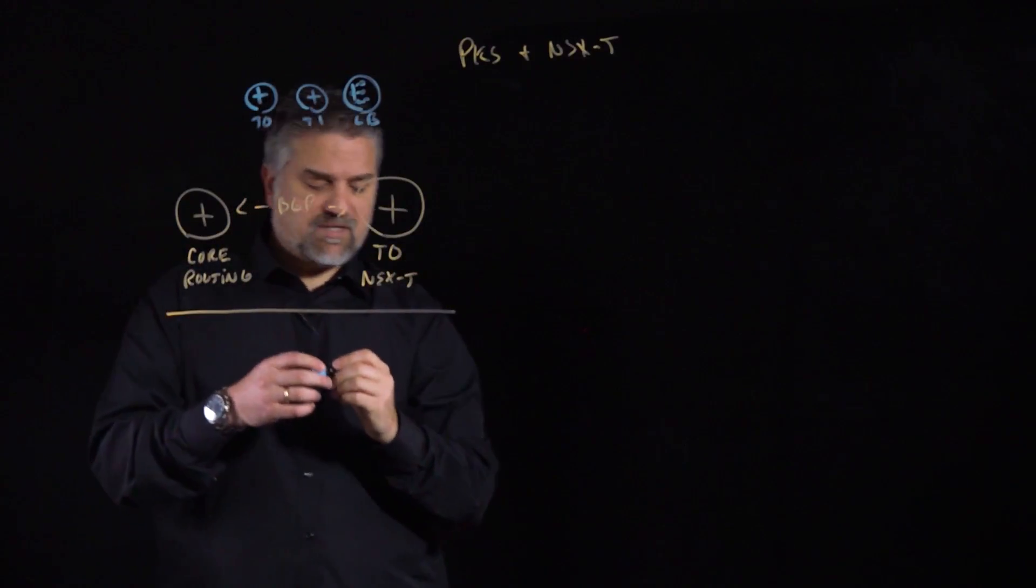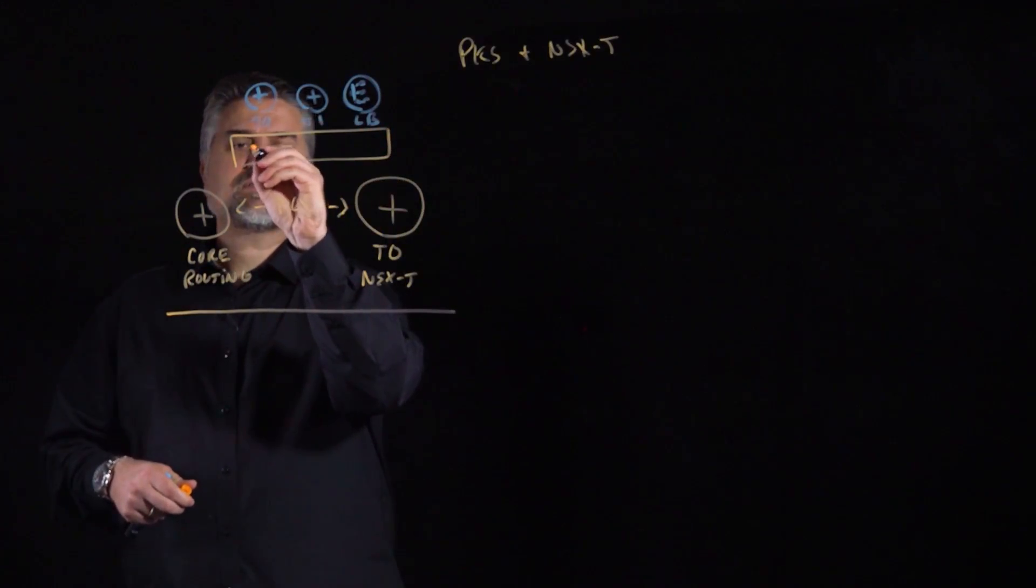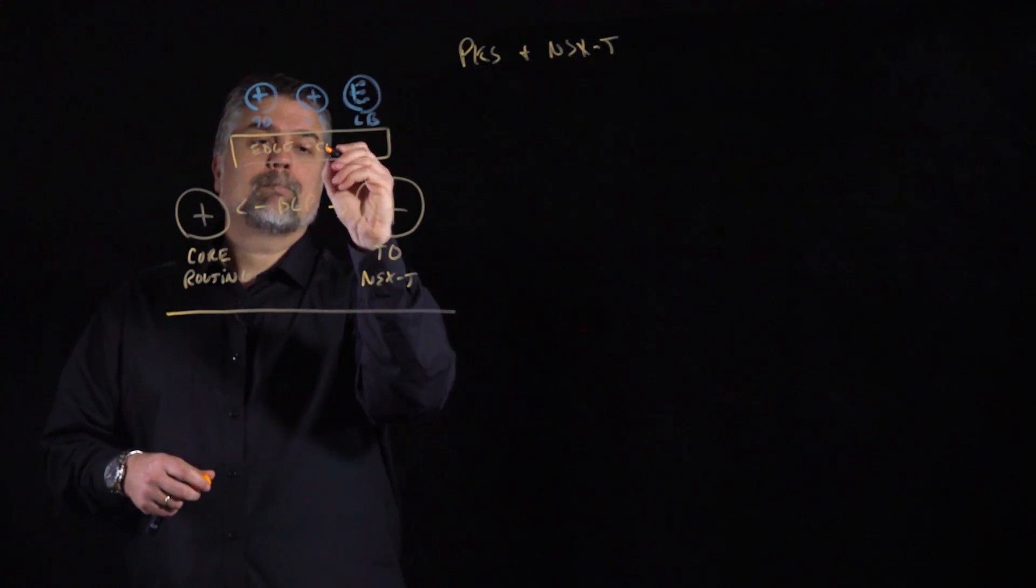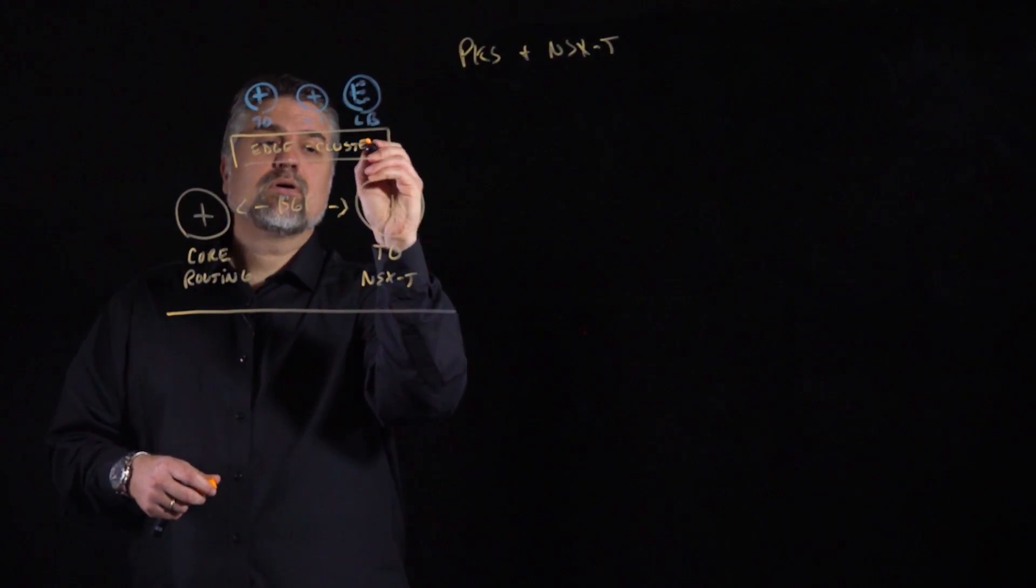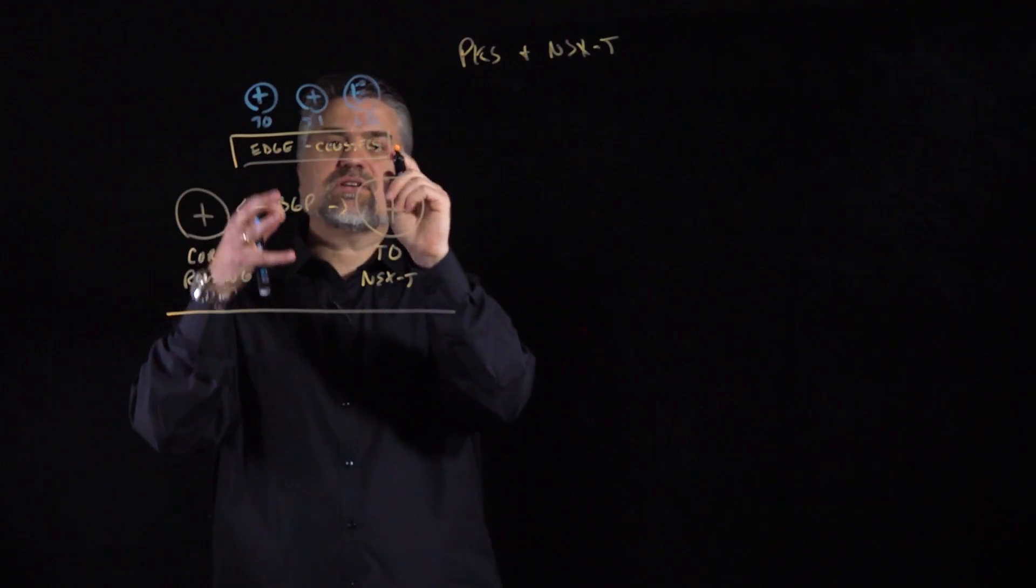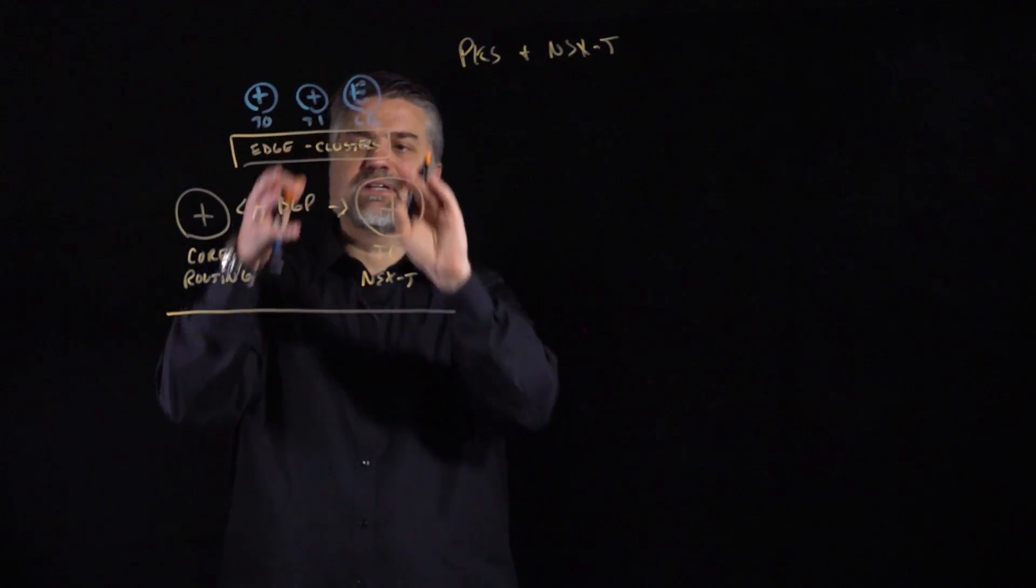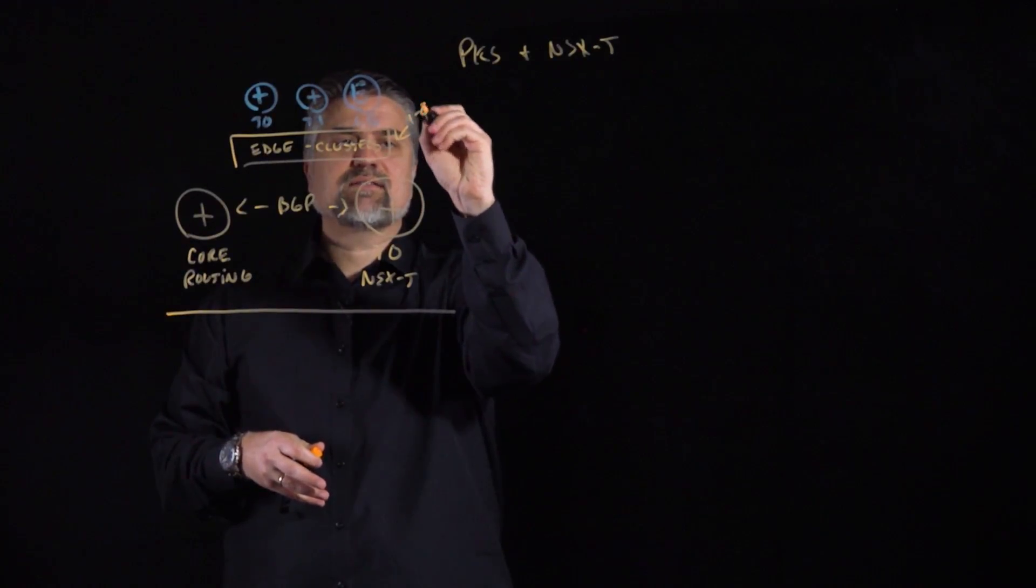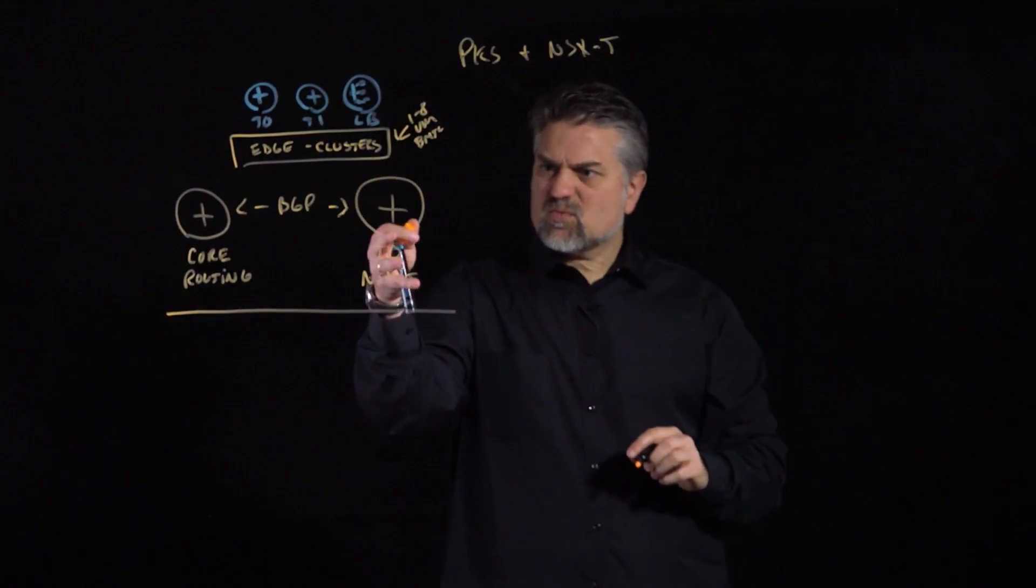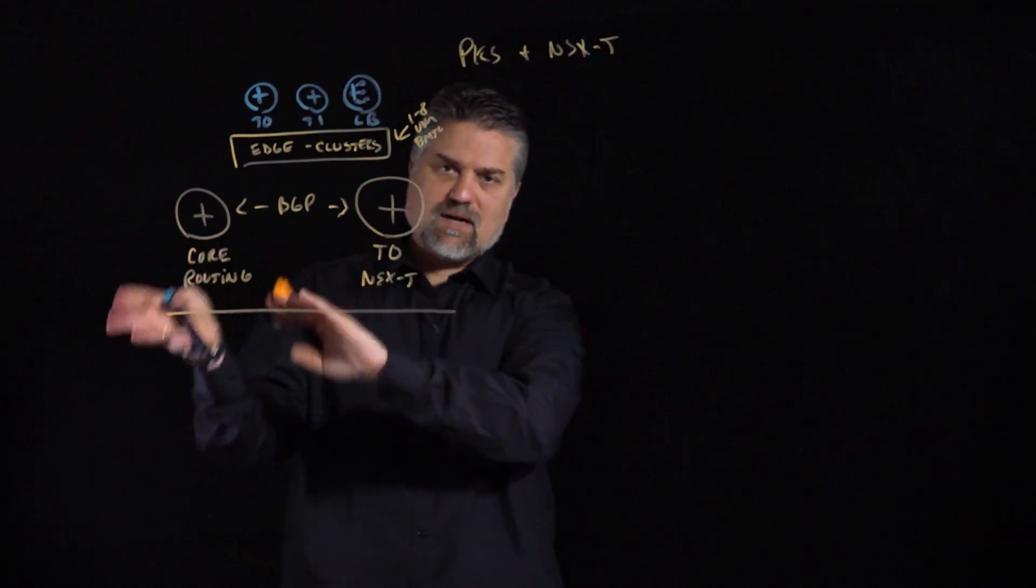The way those are all implemented is we have something called an edge cluster. An edge cluster in NSX-T is a collection of 1 to 8 VMs or physical machines that have had the edge software deployed on it. This edge cluster hosts all these virtual instances of multiple T0s, T1s, and load balancers. It's implemented by either 1 to 8 VMs or bare metal hosts. So this is where our T0 is coming from. It's coming from this cluster here, and we've got it linked appropriately via our interfaces and performing our routing to our core routing.